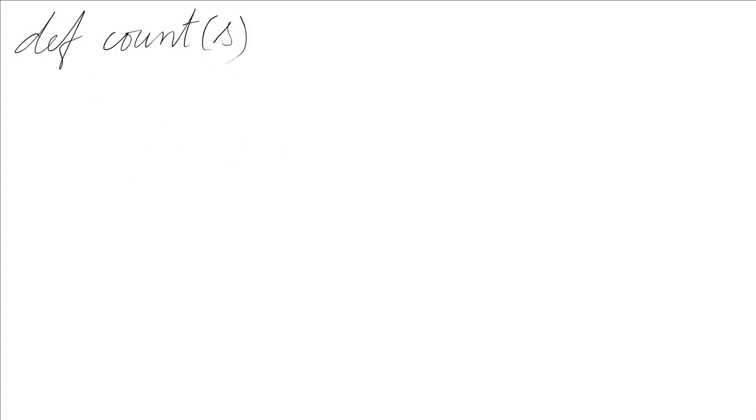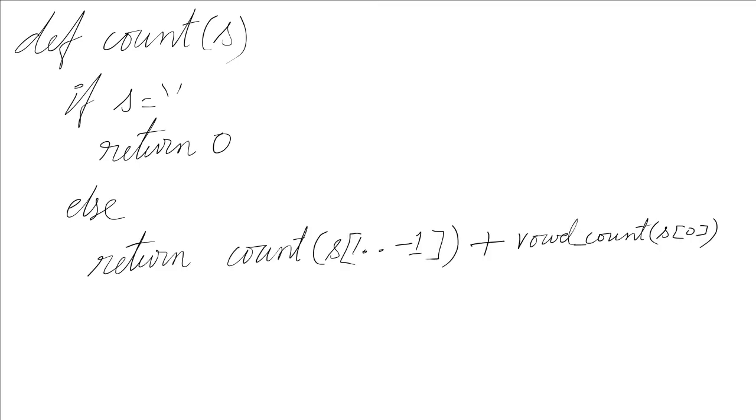The count method takes the string and we want to count the number of vowels in the string. We will check if the string is empty. If so, we return zero. Otherwise, we make a recursive call. We reduce the string by one unit by discarding the first character in the recursive call.